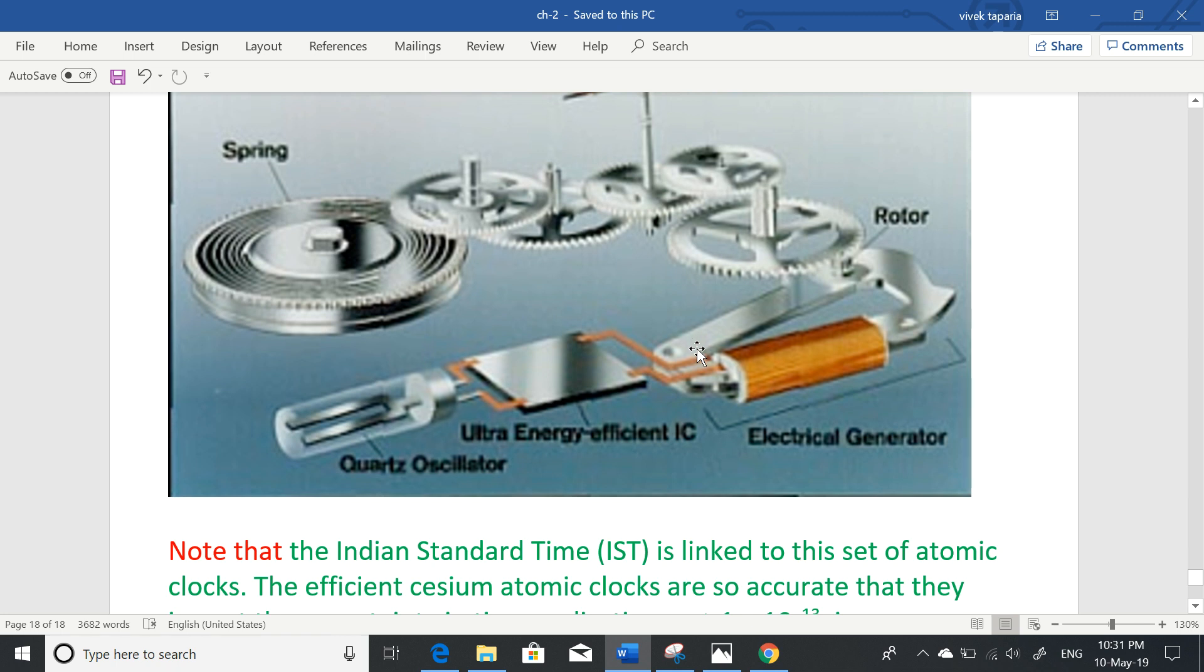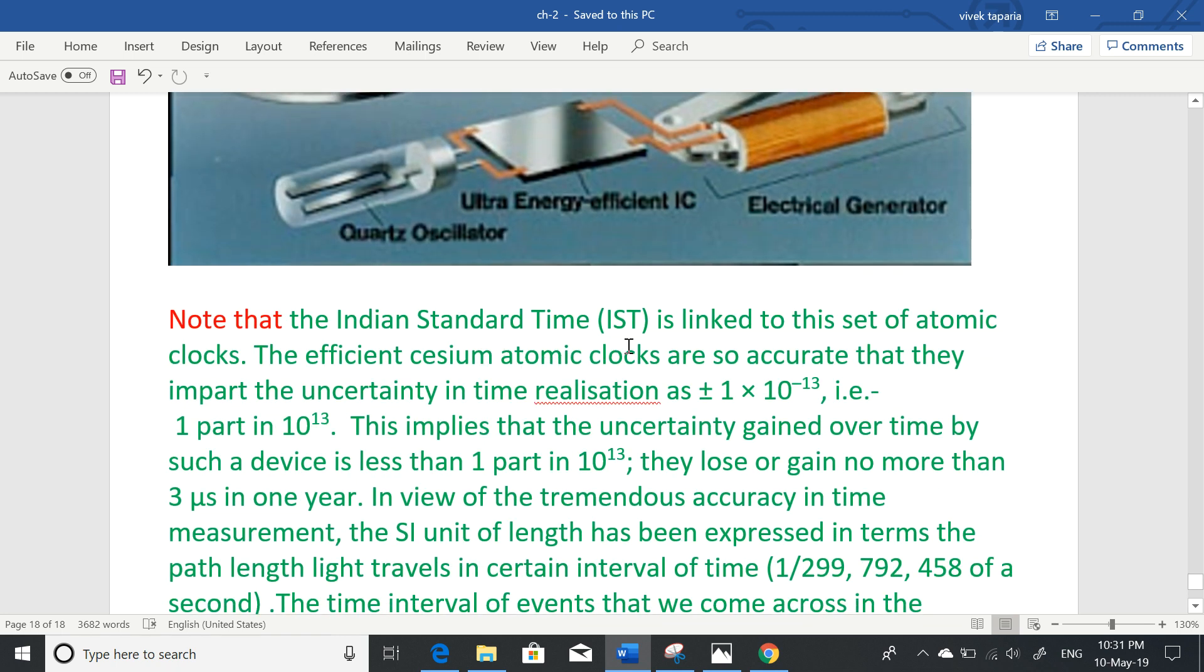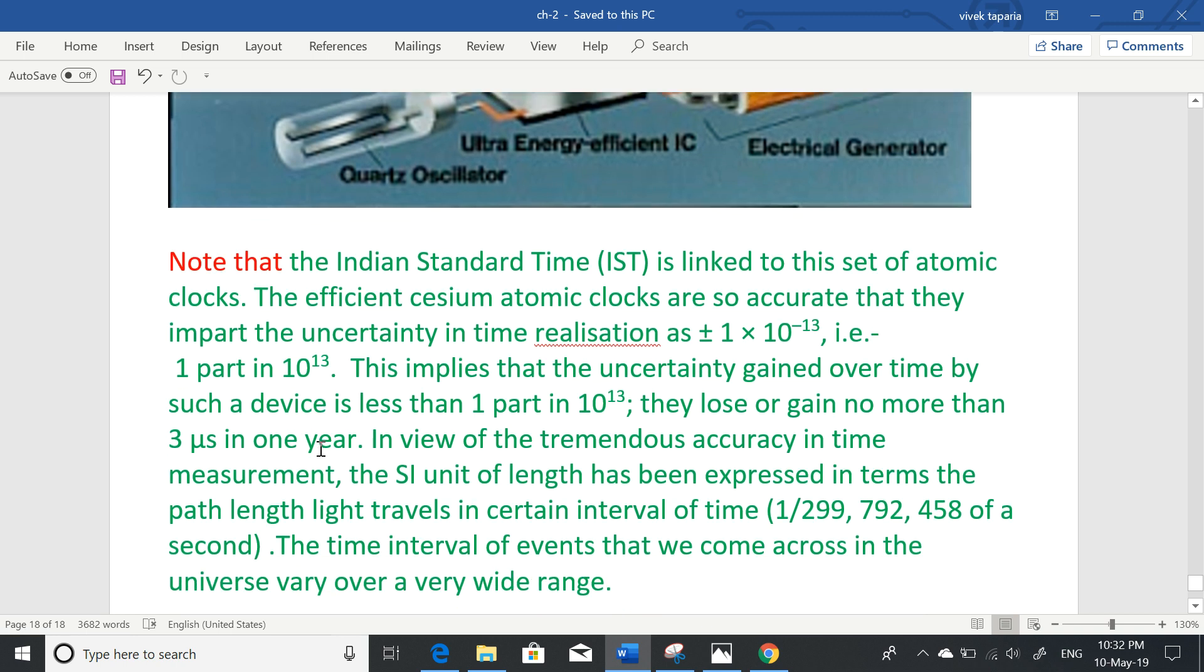Note that Indian Standard Time IST is linked to this set of atomic clocks. The efficient cesium atomic clocks are so accurate that they impart the uncertainty in time realization as ±1×10⁻¹³. This means in 10¹³ seconds one part error can occur, maximum. This implies that the uncertainty gained over time by such a device is less than one part in 10¹³. They lose or gain no more than 3 microseconds in one year.